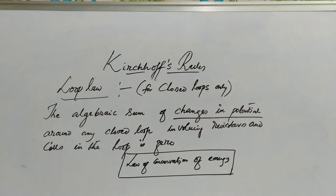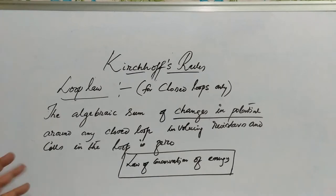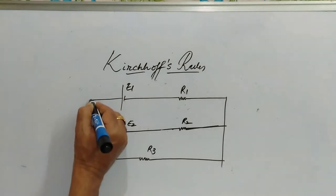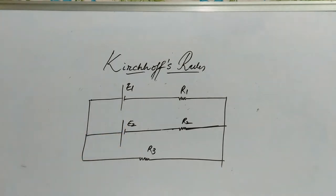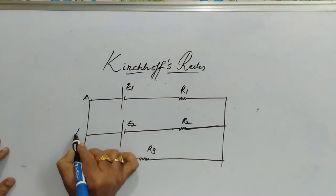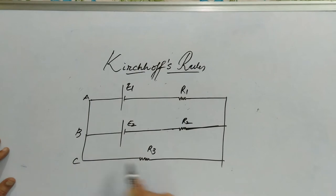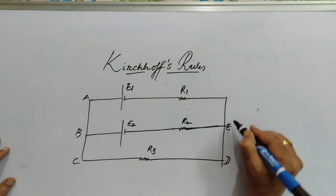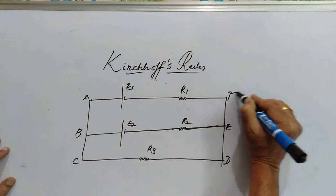Now let me explain this Loop Law and Junction Law by taking a circuit. Let's consider this circuit, which consists of two cells and three resistors. Let's name the junctions A, B, C, D, E, and finally F.